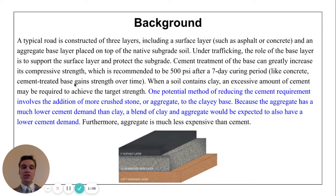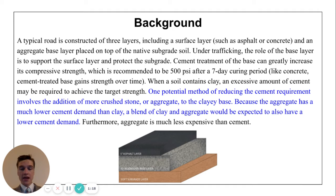One potential method of reducing the cement requirement involves the addition of crushed stone or aggregate to the clayey base. Because the aggregate has a much lower cement demand than clay, a blend of clay and aggregate would be expected to also have a lower cement demand. Furthermore, aggregate is much less expensive than cement.